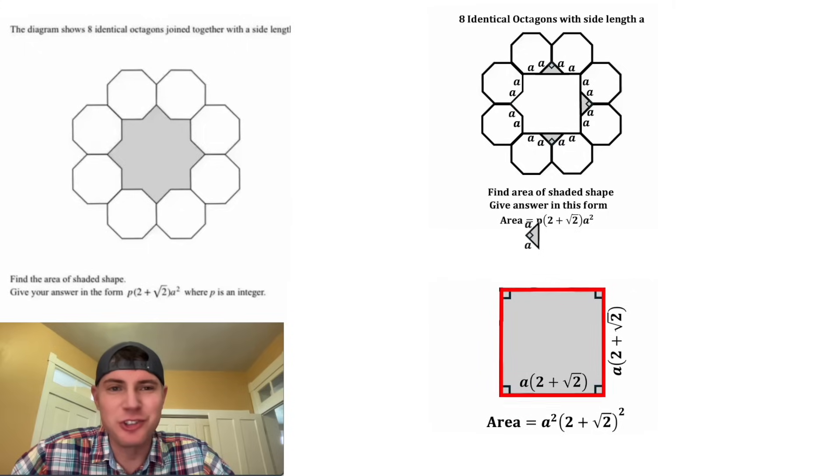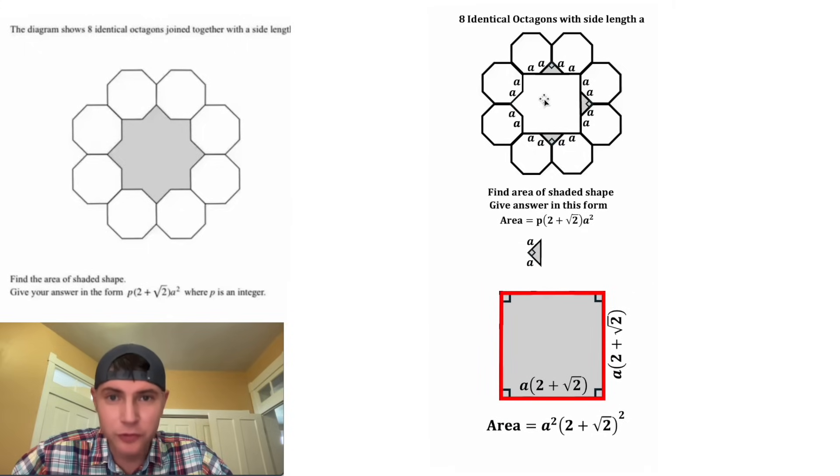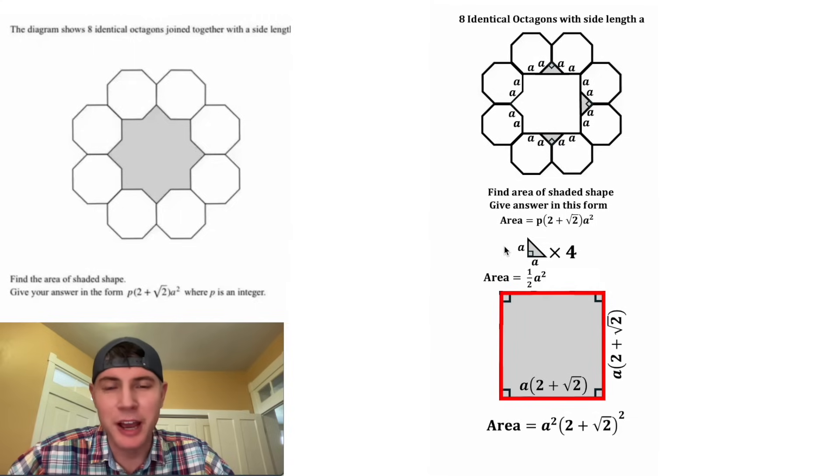Now let's drag down one of these triangles. In total, there are four of these triangles. Let's find the area of those four triangles. The area of a triangle is equal to 1 half base times height, so this would be 1 half times A times A, which would be 1 half A squared.